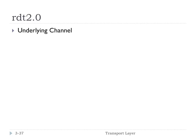Let's take it up a notch to RDT 2.0. In this case, we assume the underlying channel may cause bit errors. The channel is unreliable in the sense that bit errors can happen — a 1 sent is received as a 0 in that bit position. All packets are still delivered; they can only be corrupted, not lost. So how do we detect that a packet was corrupted? We use a checksum — an algorithm that adds additional information to the packet so we can check it on the other side and confirm we got the same packet that was sent.